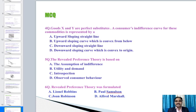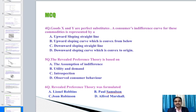Question 4 — Goods x and y are perfect substitutes. A consumer's indifference curve for these commodities is represented by: a positively sloping straight line, a positively sloping curve convex from below, a downward sloping straight line, or a downward sloping curve convex to the origin? The answer is a downward sloping straight line.